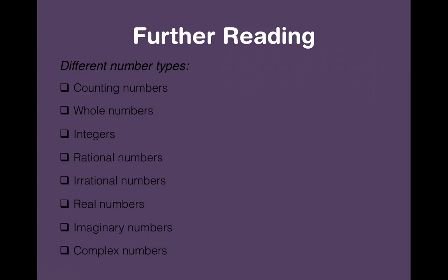There are many different number types. Some of them you might know, some might be familiar right now because this is just an introduction video. But there are counting numbers, there are whole numbers, and today you saw what integers are. There are rational numbers, and if there are rational numbers, that means there are irrational numbers. But that doesn't mean that these numbers are crazy or anything.